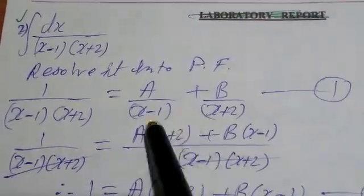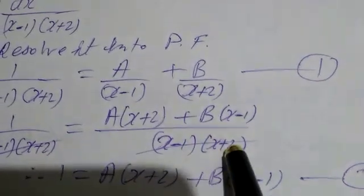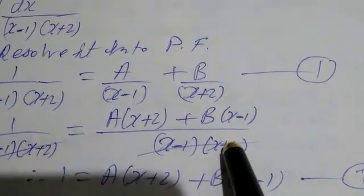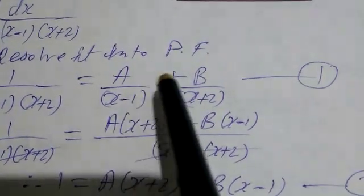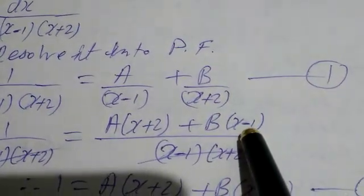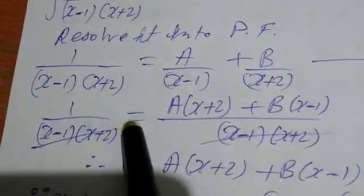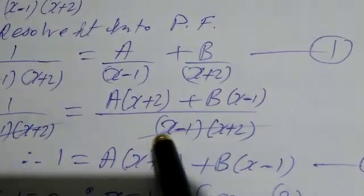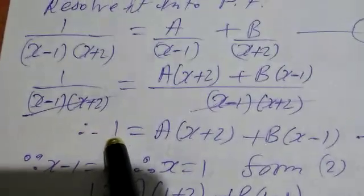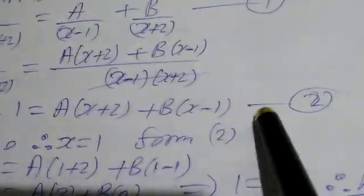We are going to take LCM. LCM will be both the brackets: (x minus 1) into (x plus 2). This will be cross-multiplied: A into (x plus 2), and (x minus 1) will be multiplied with B. The denominators cancel, so therefore 1 is equal to A into (x plus 2) plus B into (x minus 1). I am naming this equation 2.